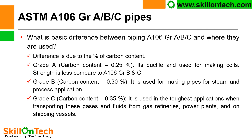Grade C pipeline — ASTM A106 grade C has carbon content of 0.35%. It is used in the toughest applications when transporting gases and fluids from gas refineries, power plants, and on shipping vessels. The strength of grade A is less compared to grade B, and grade B strength is less compared to grade C. But ductility is reversed.